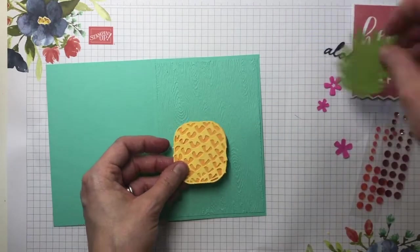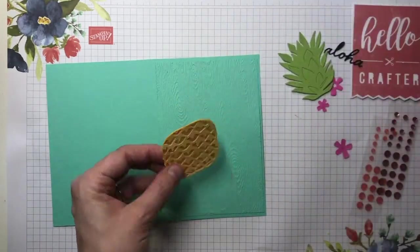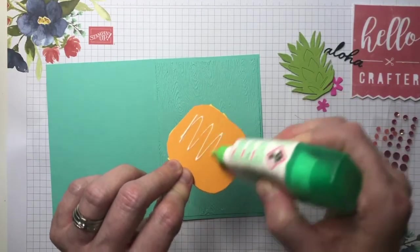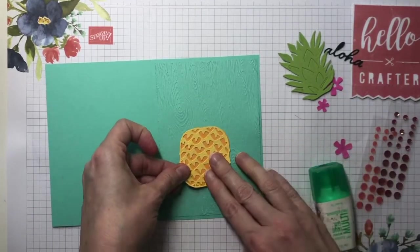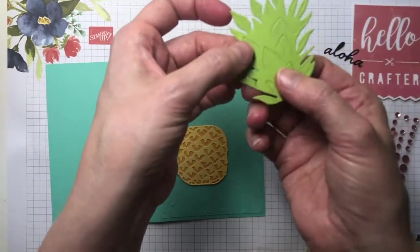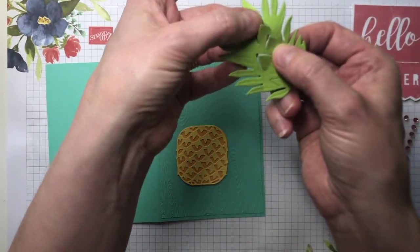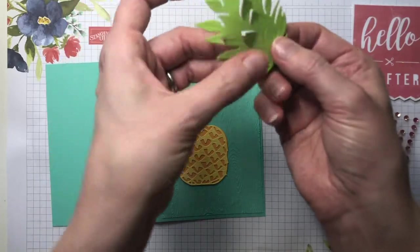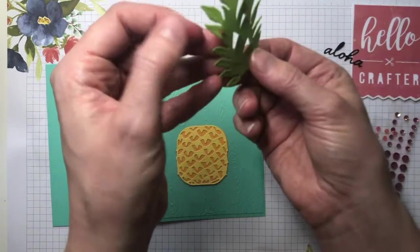And then I can just start assembling my pieces. I'm just going to use glue. You can use foam pads if you want to. And these leaves, you can pop out these little bits here to make them pop up, makes them a little bit more 3D.